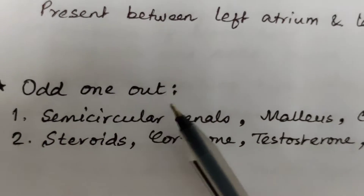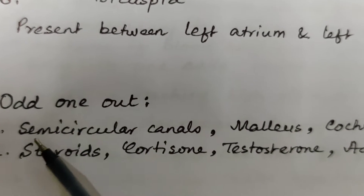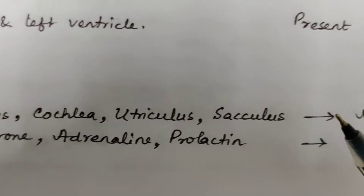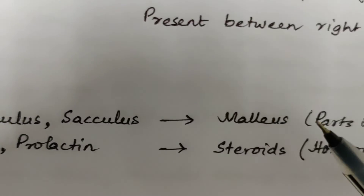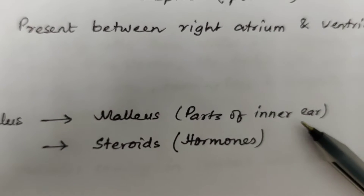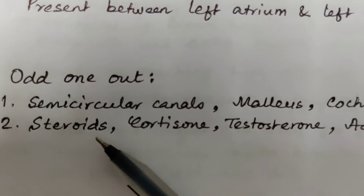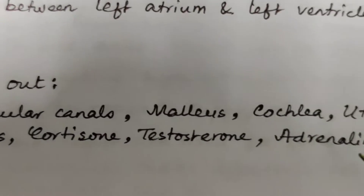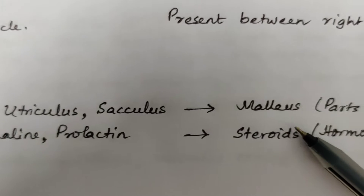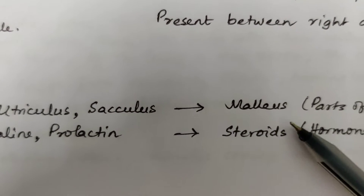Now odd one out. We have: semicircular canals, malleus, cochlea, utriculus, sacculus. The odd one is malleus because the others belong to the category of parts of the inner ear. Number two: steroids, cortisone, testosterone, adrenaline and prolactin. The category is hormones, and the odd one is steroids.